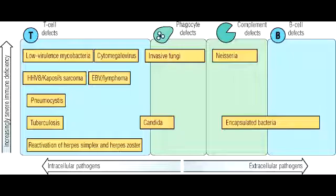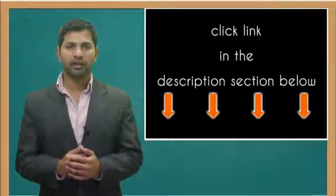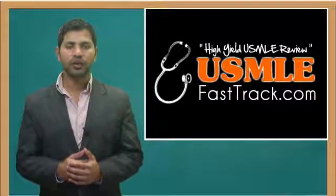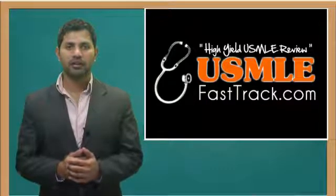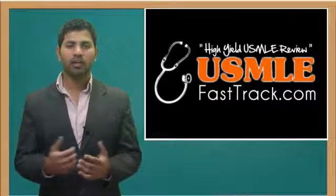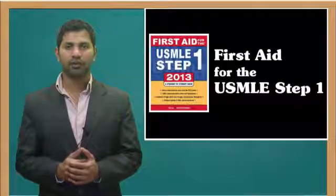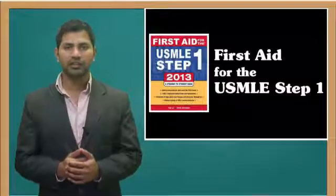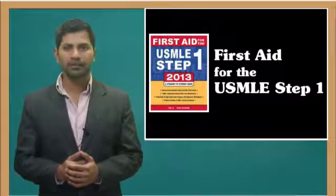To summarize infections and immunodeficiency: B-cell deficiencies tend to produce more recurrent bacterial infections, whereas T-cell deficiency will produce more fungal and viral infections. For more information, click on the link in the description below. For a full USMLE Step 1 review, check us out at USMLEFastTrack.com, where we help you review the entire First Aid for the USMLE Step 1 with high-quality videos and hundreds of detailed pictures.